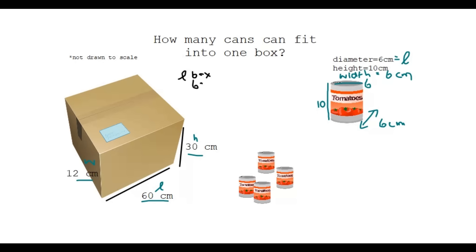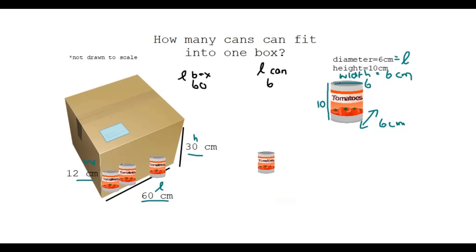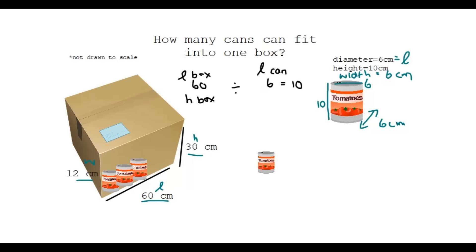Now we can start. The length of the box is sixty centimetres and the length of the can is six centimetres. How many cans can I pack along the length? Sixty divided by six gives ten — so ten cans fit along the length.